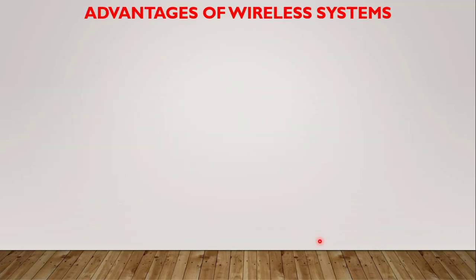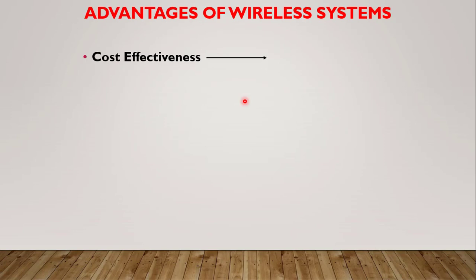Now, what are the advantages of these wireless systems? The first advantage is cost effectiveness. There is no much physical infrastructure required in wireless communication systems, so they have low cost. We also require low maintenance because there is less infrastructure required for this type of communication system.